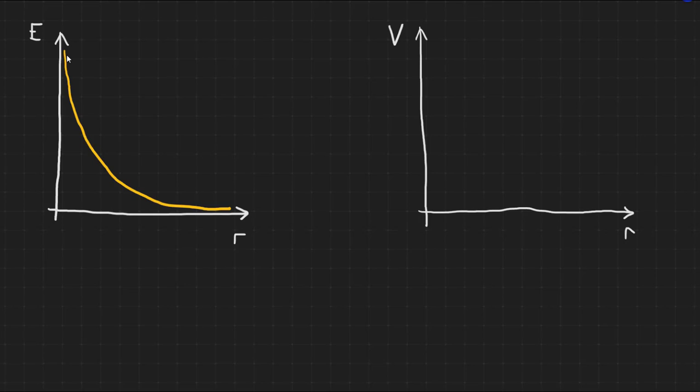We know that E equals one over four pi epsilon zero q over r squared. So if we multiply through by r, that gives us one over four pi epsilon zero q over r, which is equal to our equation from earlier for electric potential, V. So the area under the graph is the electric potential.